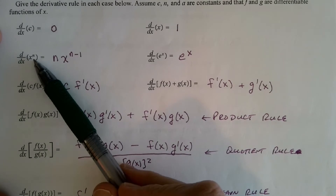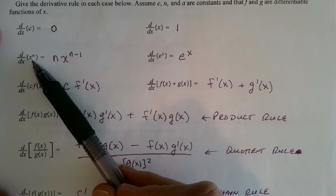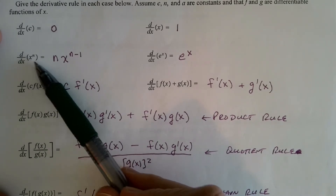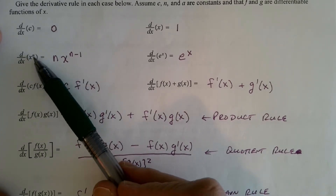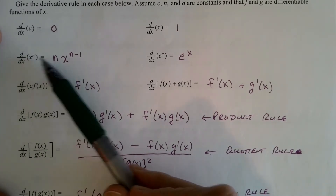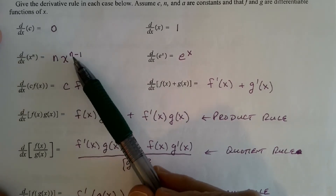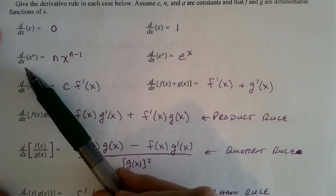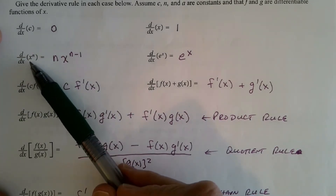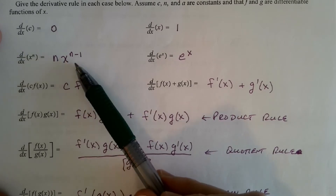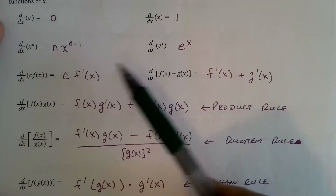The derivative of x to the N in general — this is the so-called power rule. We bring the power down and then subtract 1 from the exponent. So the derivative of x cubed is 3x squared. That should be familiar to you.